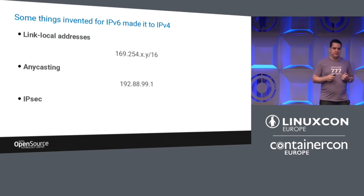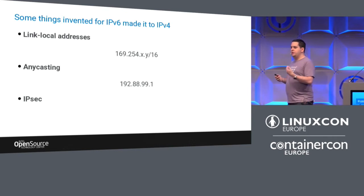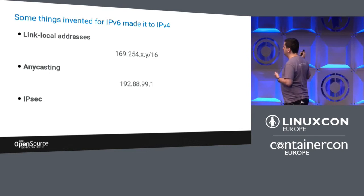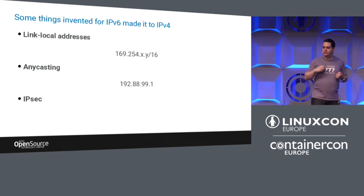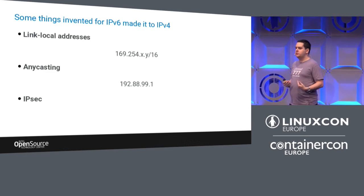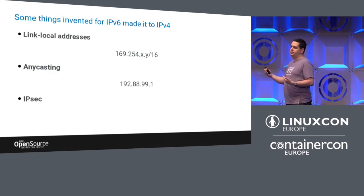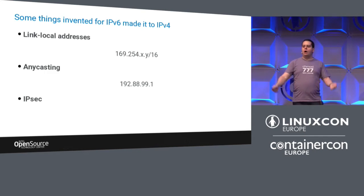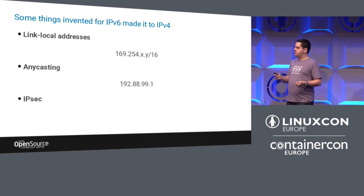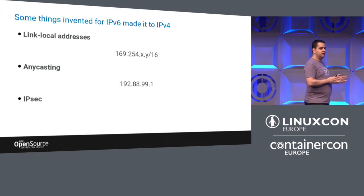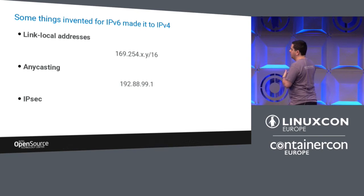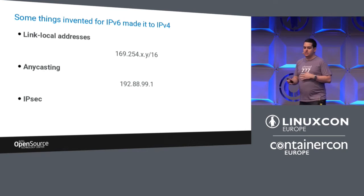Some things invented for v6 actually made it back to v4. If you've connected to a wireless network with no internet connectivity or a down DHCP server, you may have seen a 169.254 address — that's a link-local address in v4, automatically assigned when no other address was found. In IPv6, when you see a link-local address it's quite different, because it actually means you may have other devices on the same network to talk to. It doesn't mean you have internet access — that's a separate matter.